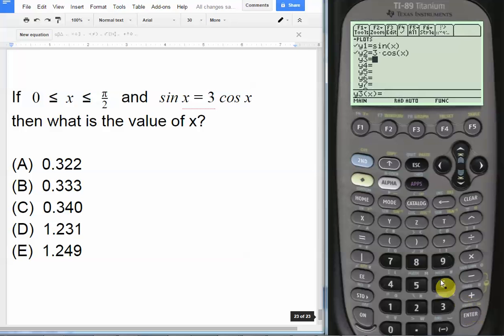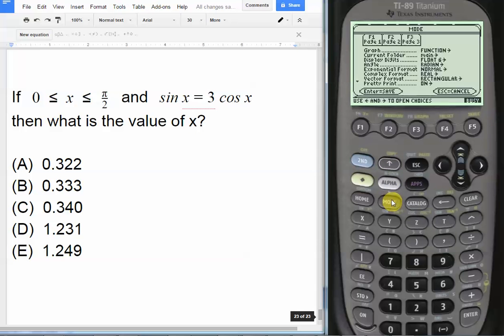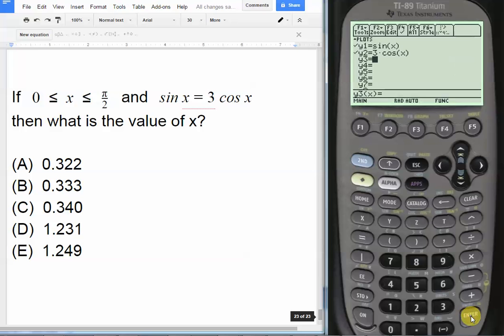Now we have to make sure we're in radians mode because we can see the problem uses π which is radians. I'm actually already in radians, but just in case you're not, go to mode, then go down here to angle and make sure that you hit radian and hit enter.